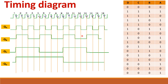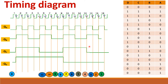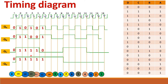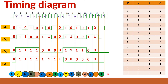This is the timing diagram. First all outputs are high, that is 15 — 1, 1, 1, 1 — then 14, 13, 12, and so on. Because it is a down counter it starts from 15 and goes in the reverse direction, or you can start from 0, but it counts downward.